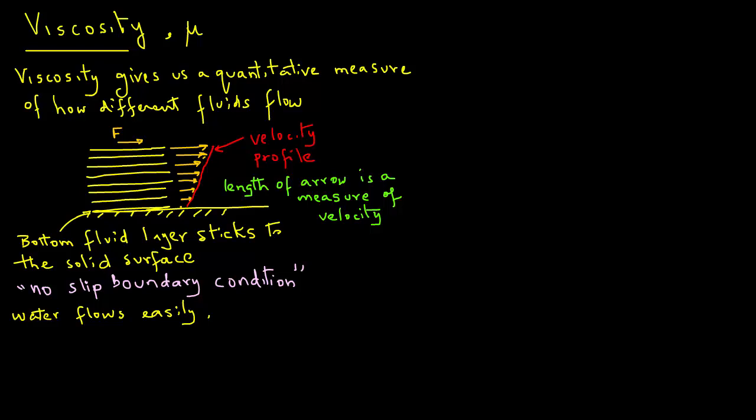Whereas if you replace water with, say, honey, you know that the opposing force to the shearing force is going to be quite high. That's why honey does not flow as easily as water. So the term viscosity, which is the measure of that flow, tells us about the difference between the flow characteristics of water compared with another fluid, for example, honey.